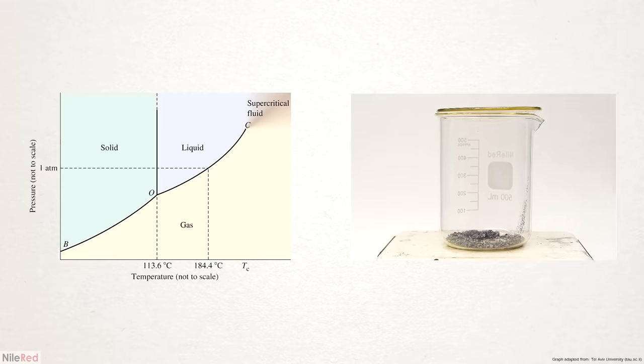Okay, so that was just for water, but now let's take a look at the diagram for iodine, which actually looks pretty similar. I'm just going to be starting at room temperature and normal atmospheric pressure, which lands us squarely in the solid zone.